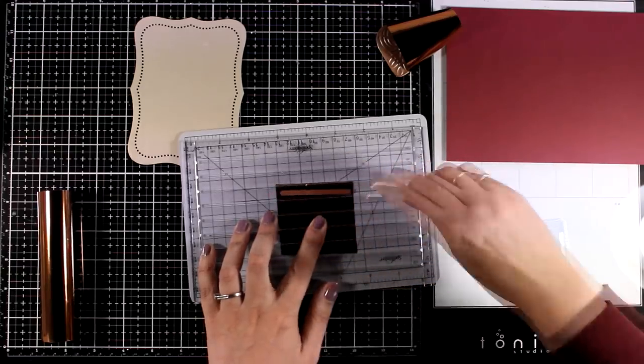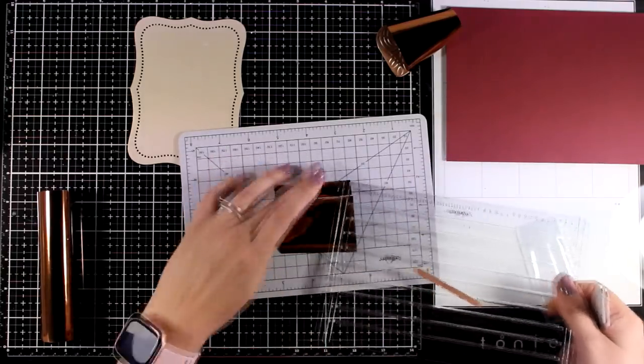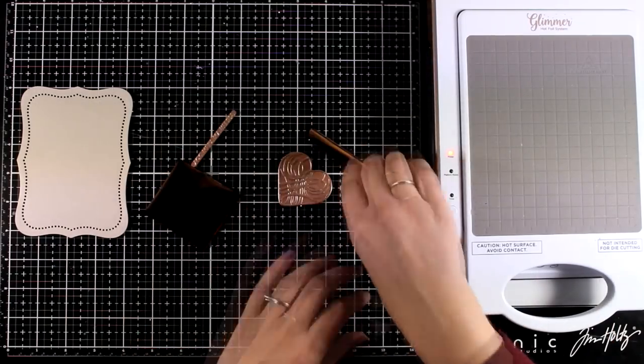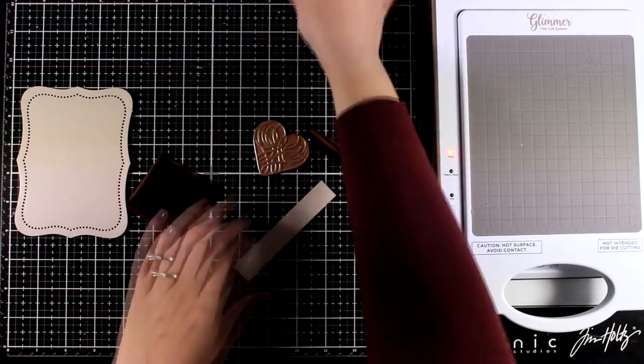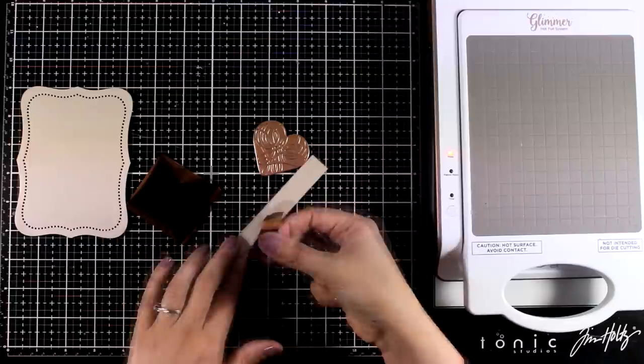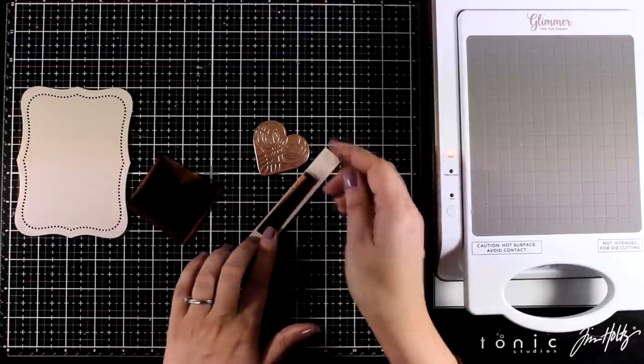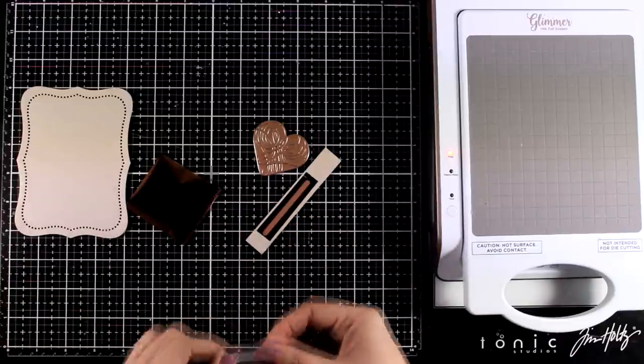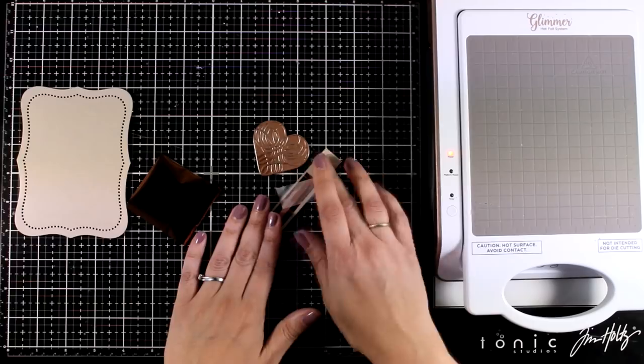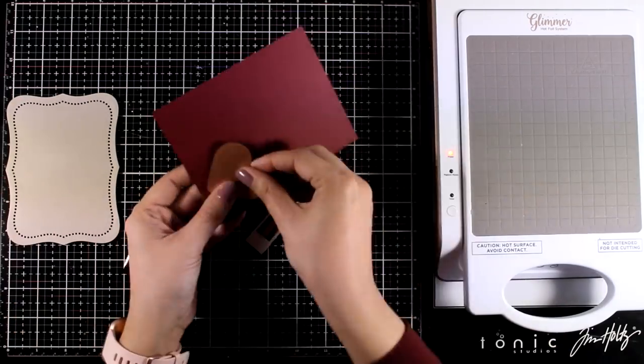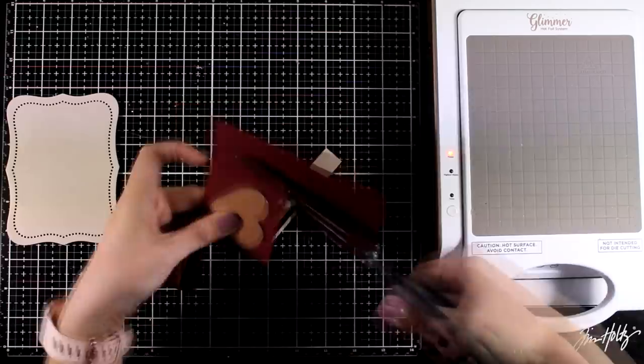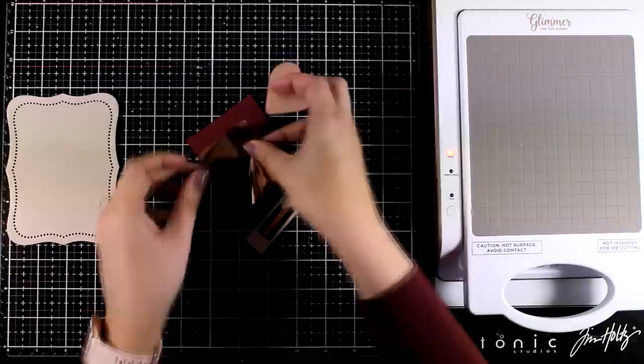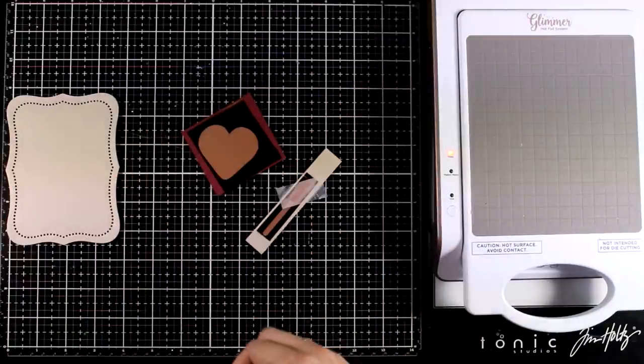And I'm also going to cut out a piece for the sentiment as well. As my foiling machine is getting warm, I'm going to prepare all the pieces. I like to secure the foiling plates on top of my paper and the foil using some low tack tape or you can use washi tape for sure, just to make sure that nothing is going to shift. There is a lot of movement there since you have to take out the platform and run it through your die cutting machine. So it's better to be safe. For my heart, I decided to go with this dark red cardstock. Since I'm going for a vintage look and feel, I didn't want to use any bright red color for my heart.